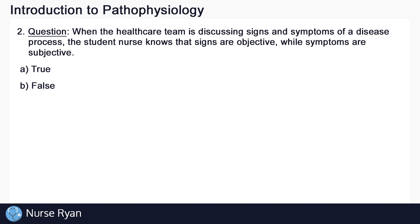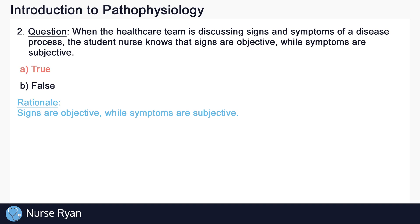On to question number two: when the healthcare team is discussing signs and symptoms of a disease process, the student nurse knows that signs are objective, while symptoms are subjective. The answer here is A, true. Signs are objective — something observable that is not influenced by personal feelings or opinions — while symptoms are subjective, something typically felt by the patient and influenced by personal feelings or opinions.